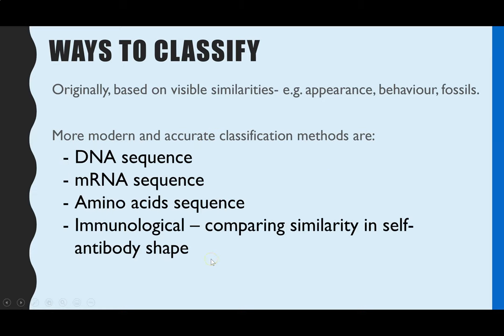There are four methods you need to know. The AQA spec explicitly requires knowledge of: comparing how similar the DNA base sequence is, comparing DNA base sequences, and comparing amino acid sequences — the more similar the sequence, the more closely related the organisms are. The fourth method, also on the spec, is immunological comparisons: comparing how similar antigens are on organisms' own cells, and therefore the shapes of any self-antibodies they make. The more similar the shape, the more closely related they are.